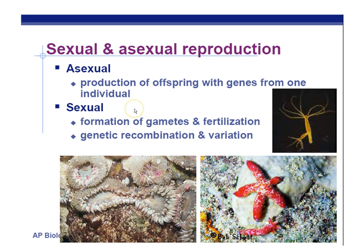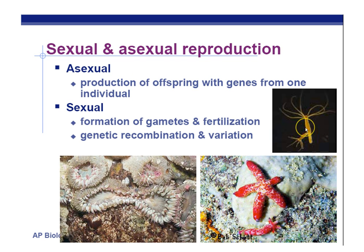Some simple animals are able to do asexual reproduction, things like hydra — about the size of your fingernail, lives in the ocean, a type of cnidarian relative to jellyfish. And then we have an echinoderm, the starfish. When you break off their arm, they grow a whole new body, and that is asexual reproduction.